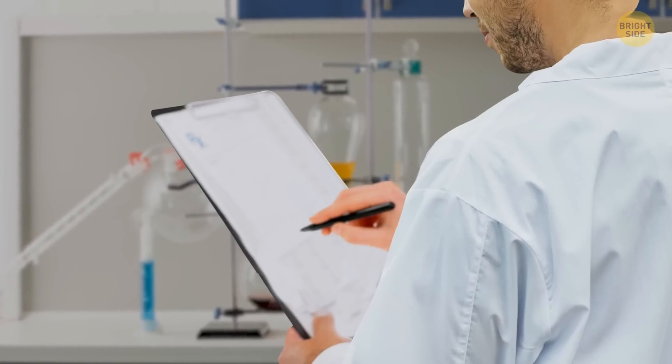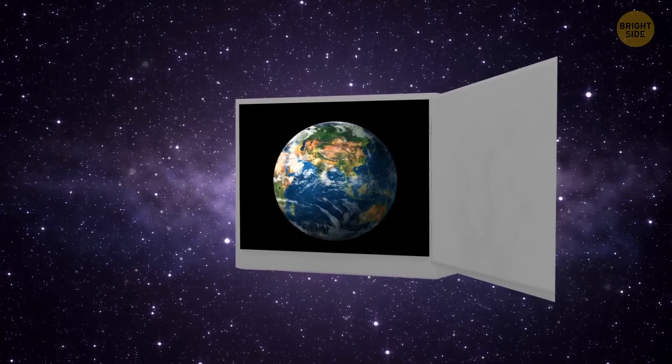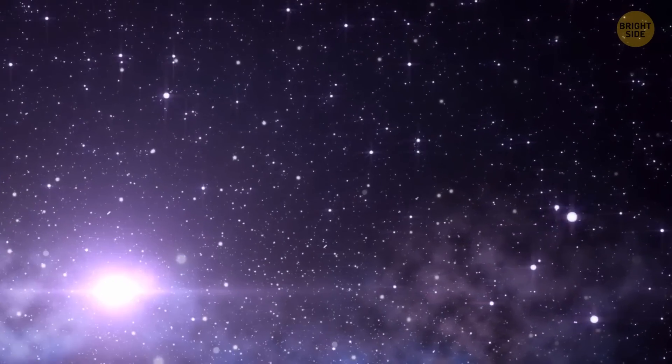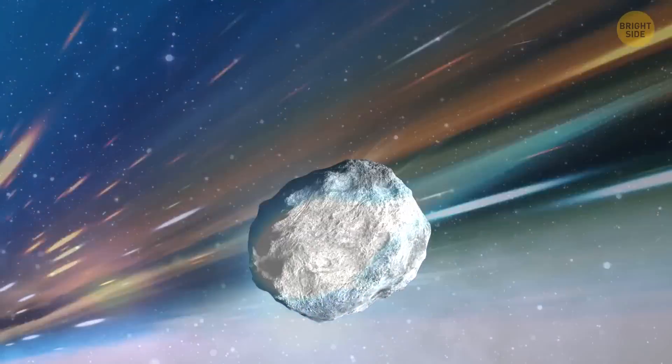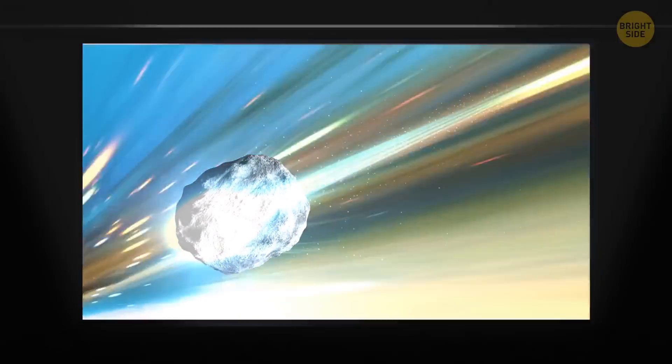Although scientists are pretty sure there's no such threat in the near future, it can't be ruled out completely, and humanity needs at least 5 years to prepare for this event. If a big near-Earth asteroid suddenly changes its course and turns right toward our planet, we won't stand a chance against it.